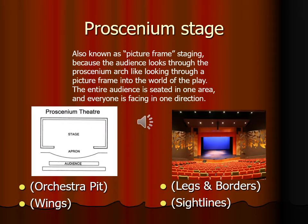We're going to start with the proscenium stage. You have seen a proscenium stage because the play Sylvia was performed in Temple Theater, which is a pretty classic proscenium stage. It's sometimes called the picture frame stage because the audience looks through the proscenium arch — the opening in the wall that would be the fourth wall of the theater. In the diagram you can see partial walls on either side that go up and around the viewing area, forming the proscenium arch.